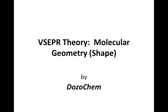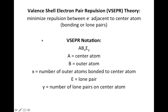Welcome to DozoChem. This video covers VSEPR theory, which helps predict molecular geometry or shapes of molecules. VSEPR is short for valence shell electron pair repulsion theory, and the idea is that electrons are going to be arranged around the center atom in three dimensions to minimize repulsion between the electrons.